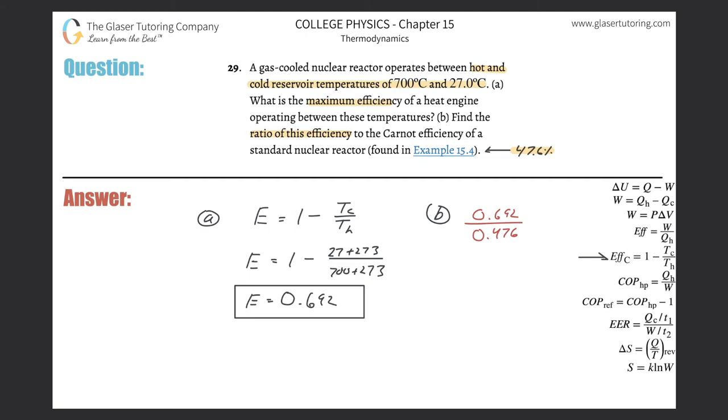So what do we get? We get about 1.45 here. So basically, the nuclear reactor here is about 1.45 times as efficient as the other one in that example. So that's it. Simple.